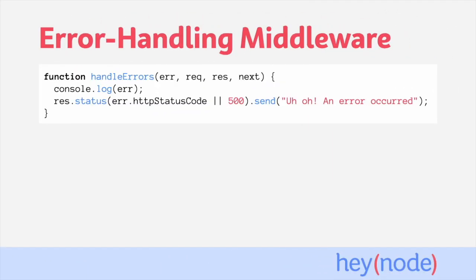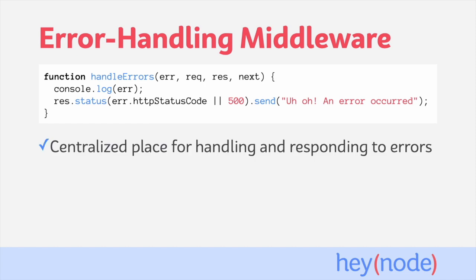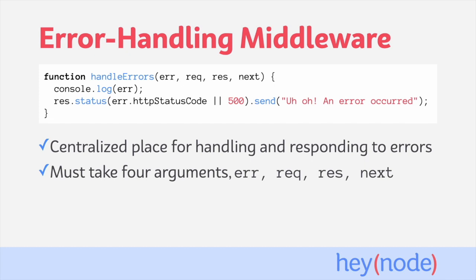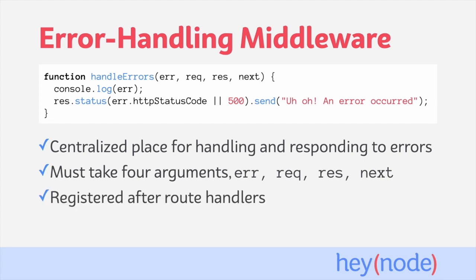Error handling middlewares work slightly differently than regular middleware. The role of error handling middleware is to be a centralized place to deal with errors that occur when handling a request. Your error handling middleware will decide what type of response to return to a client depending on the error it received. Error handling middleware must take four arguments: error, request, response, and next. That's how Express identifies a middleware as an error handler — it checks that it takes four arguments. Error handling middleware is registered after all your route handlers so it can catch errors that occur while handling a request.